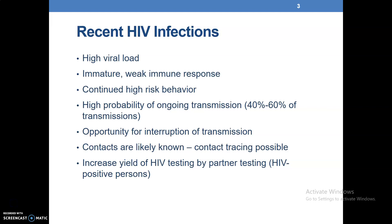What are the characteristics of recent HIV infections? They are characterized by high viral load. The immune response is weak and immature. There is continued high-risk behavior as the individual is not aware of their status. There is high probability of ongoing transmission — 40 to 60 percent of transmissions.